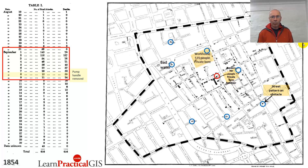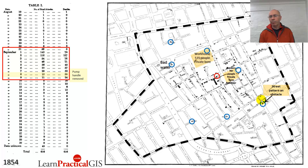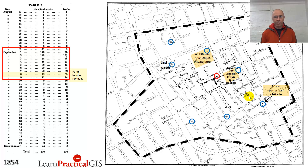Down here, why are there so many incidences of cholera when it seems so close to another well? If you look closely, that well is in a dead end. So it was actually easier for these people to get water from the Broad Street pump than from the pump that seems much closer. That's a really geographical problem — one of accessibility. And accessibility is a geographical problem you'll come across quite often if you pursue any career in GIS.